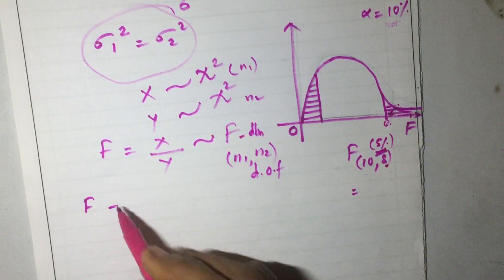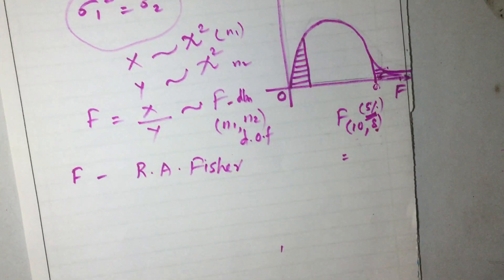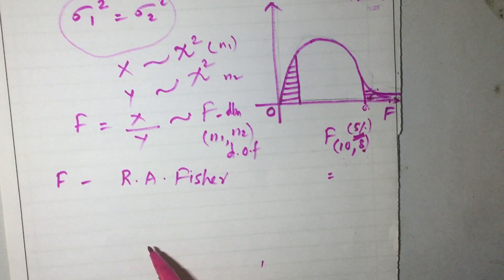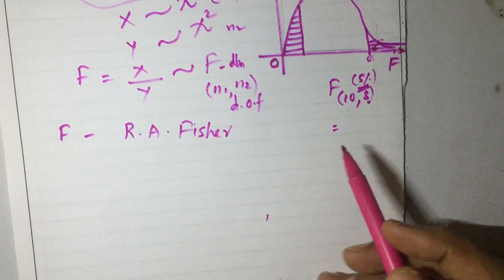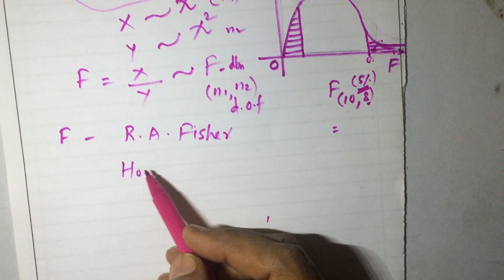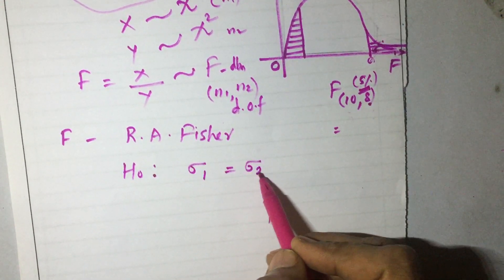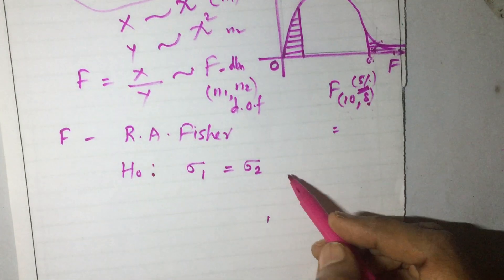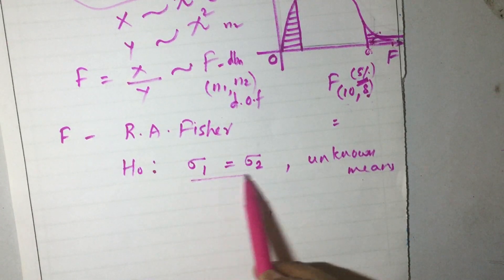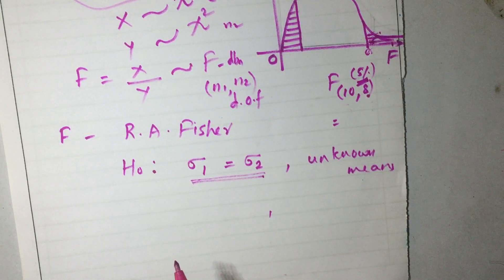The F-test was introduced by the statistician R.A. Fisher. Suppose we want to test the hypothesis that the standard deviations of two populations with unknown means are equal — that is, sigma1 equals sigma2, or sigma1 squared equals sigma2 squared. We need to test whether the standard deviations of the two populations with unknown means are equal or not using the F-test.